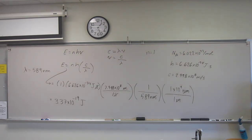So this problem also has a part B and it asks us, well, how many joules would it be per mole of photons at 589 nanometers?